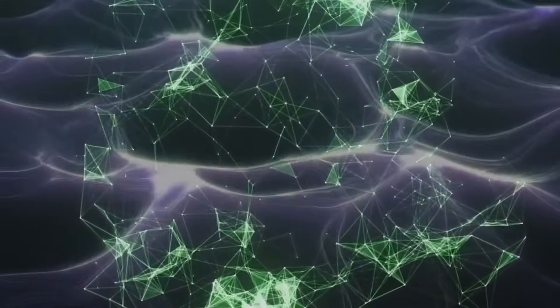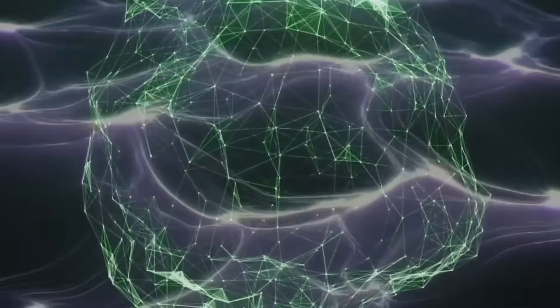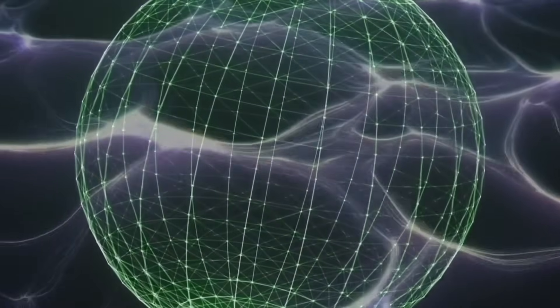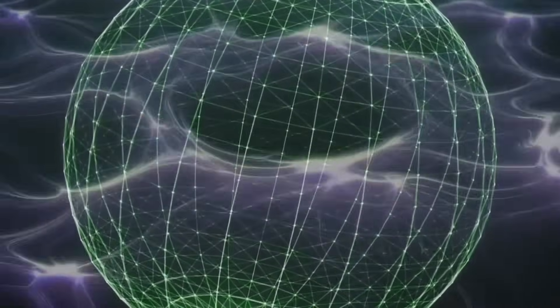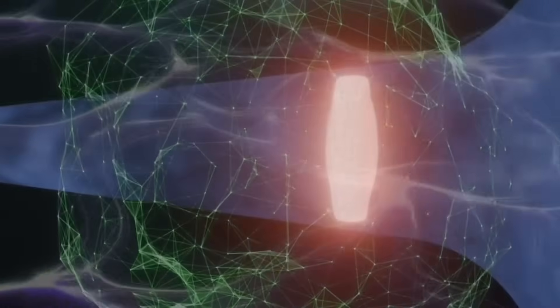Everything that crosses a black hole's event horizon becomes part of a complex, holographic computation at its boundary. The information isn't lost. It's transformed.